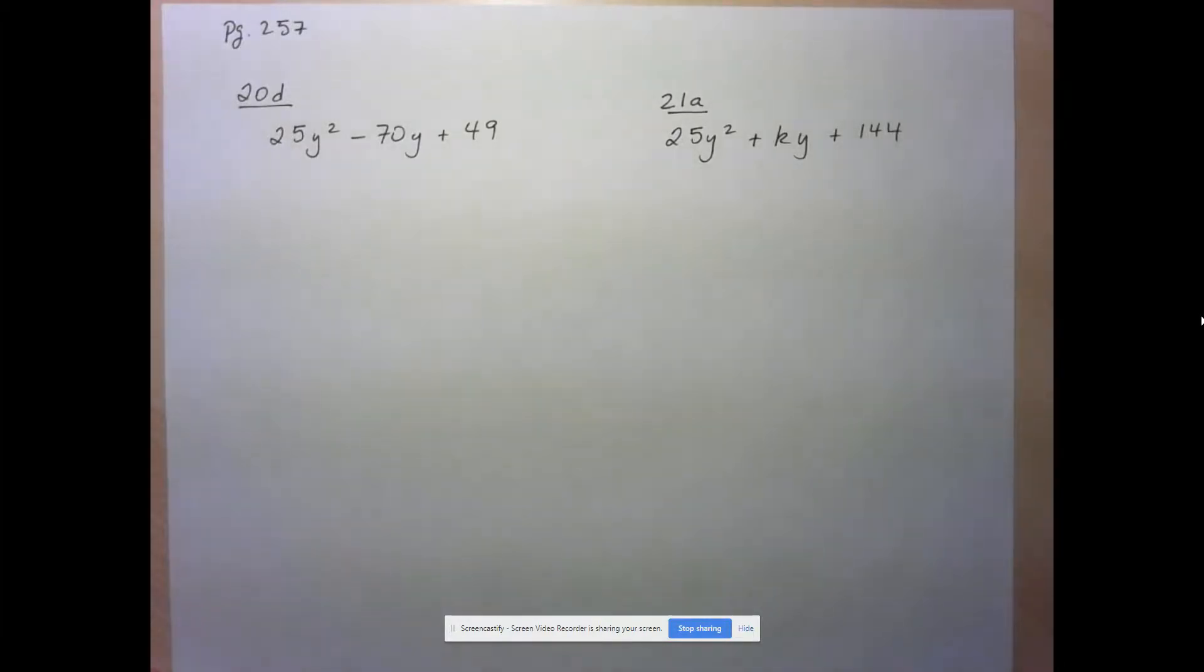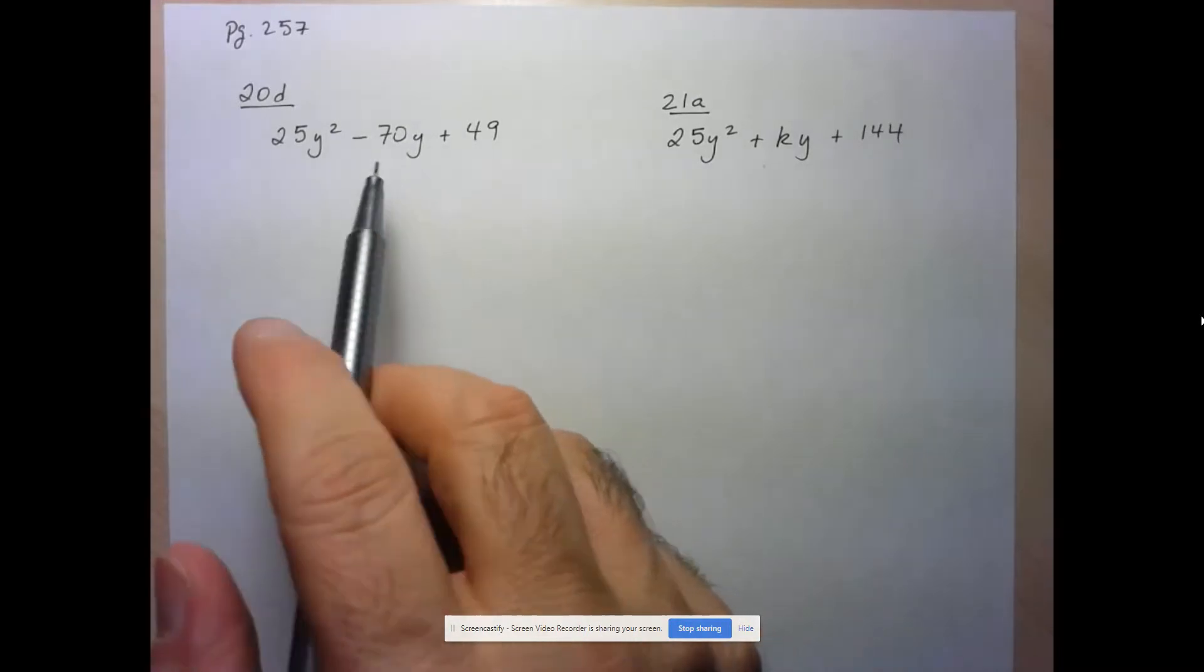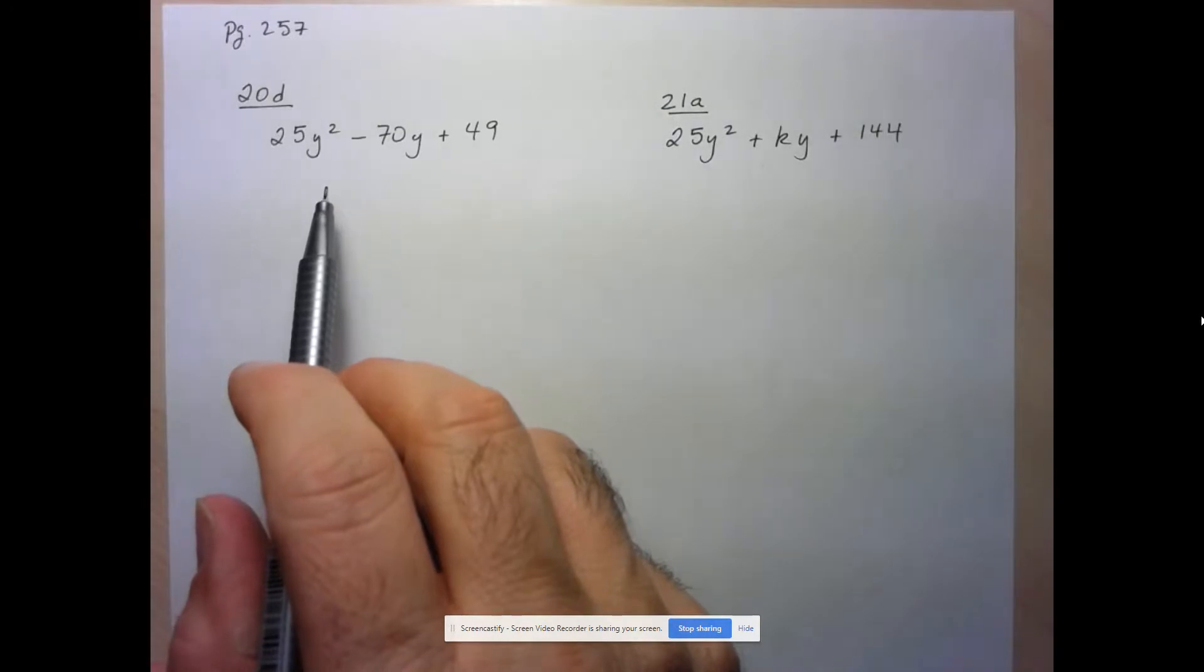Hi folks, we're going to take a look at a couple of questions from the unit 6 assignment, which are a similar nature here. So in 20D, they're asking us to confirm that this is a perfect square trinomial.